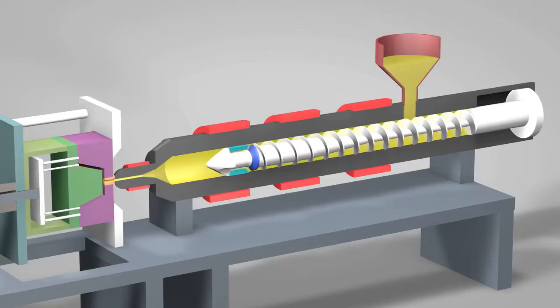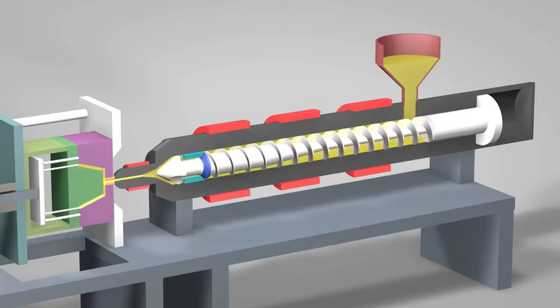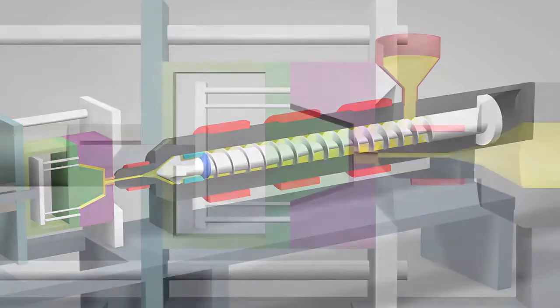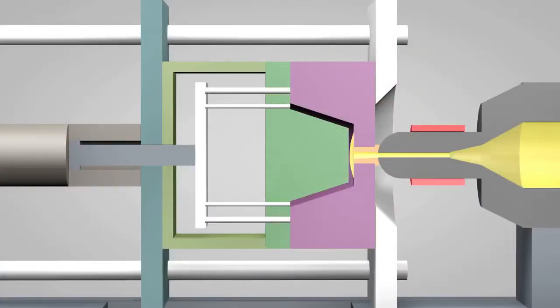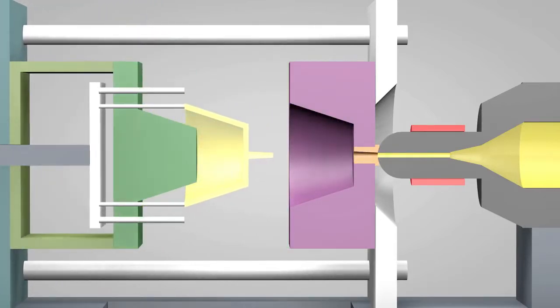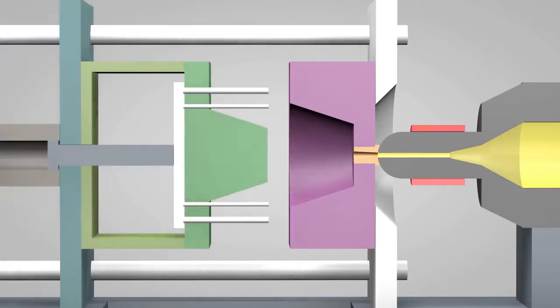Once enough molten plastic is in front of the screw, it ramps forward like the plunger of a syringe. In a matter of seconds, the screw injects the molten plastic into the empty part of the mold, called the cavity image. The plastic solidifies in under a minute, the mold opens, and the part is ejected. The mold then closes and the process repeats.